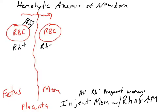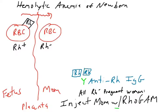Even if the father is Rh negative, any Rh negative pregnant woman is injected with RhoGAM — just to be safe — so that she does not make anti-Rh antibodies. The drug RhoGAM is an IgG antibody that binds Rh. That's really strange because that's the exact same thing that damaged the red blood cells in the first place. Why are we injecting it into the mother?